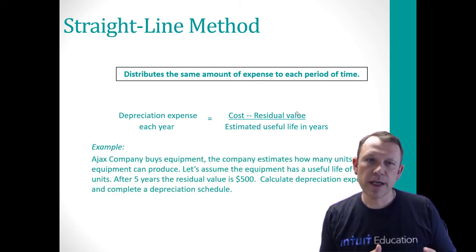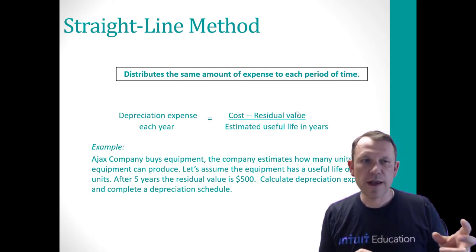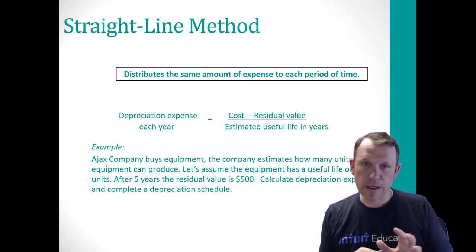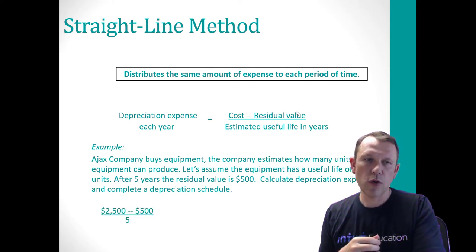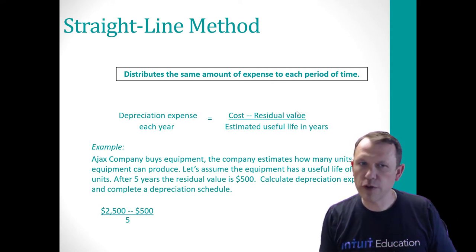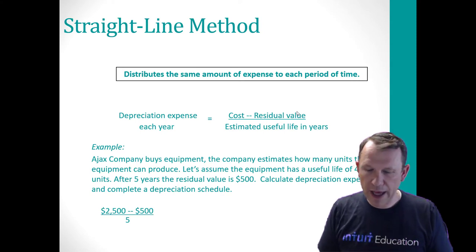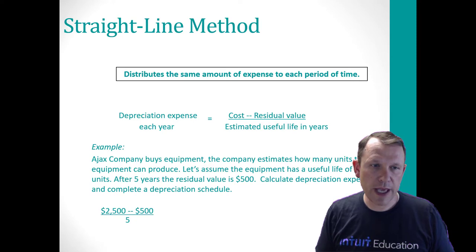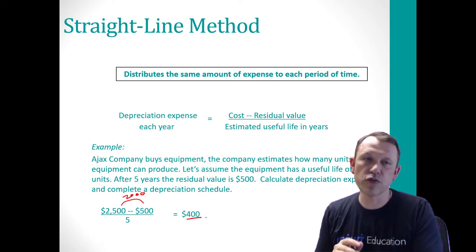Here's an example: Ajax Company buys equipment that can produce 4,000 units, with a residual value of $500 after five years. The original cost is $2,500. We subtract the $500 residual value, leaving a depreciable amount of $2,000. Dividing $2,000 by five years gives us $400 per year in depreciation expense. That's the straight-line method.